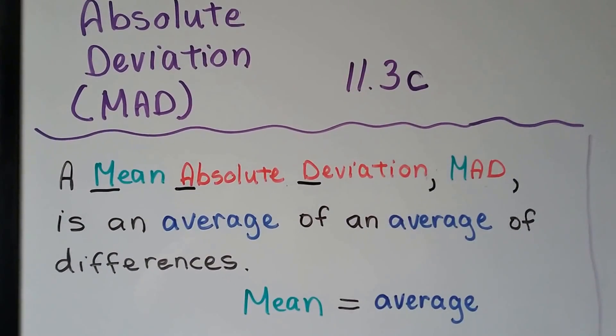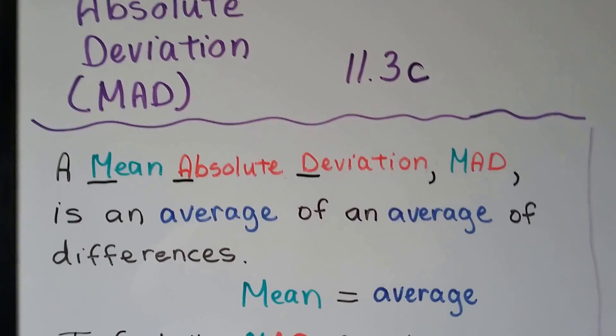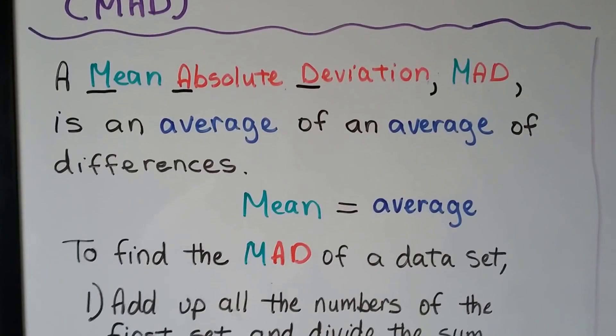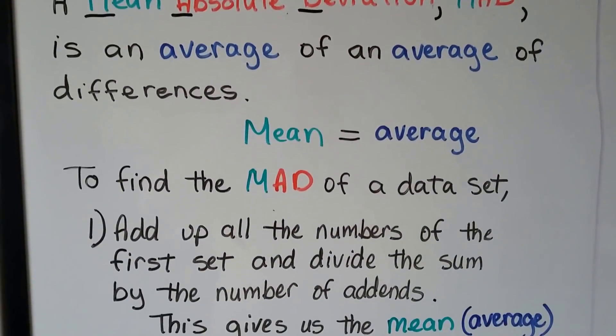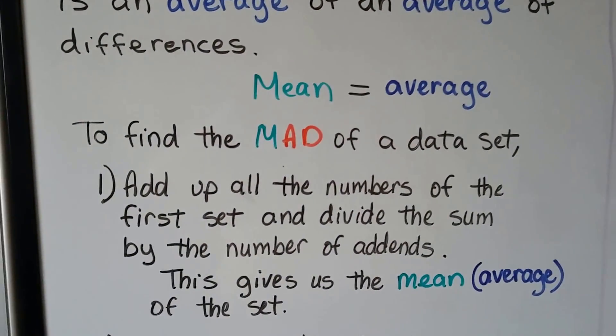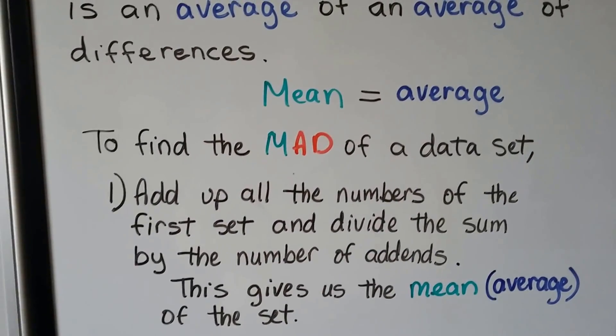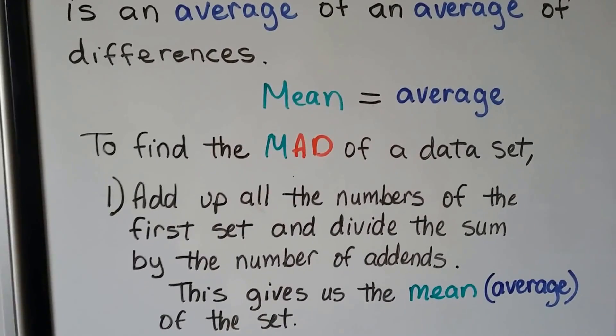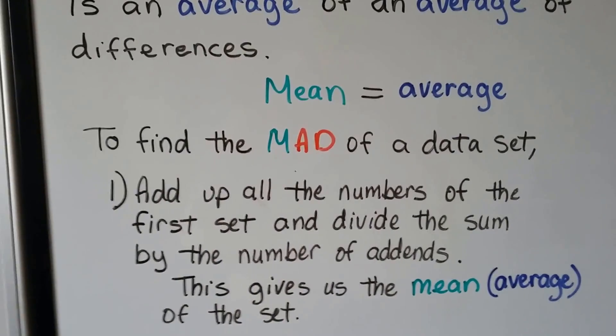The word mean means average. To find the MAD of a data set, we add up all the numbers of the first set and divide the sum by the number of addends. This gives us the mean, the average, of the set.